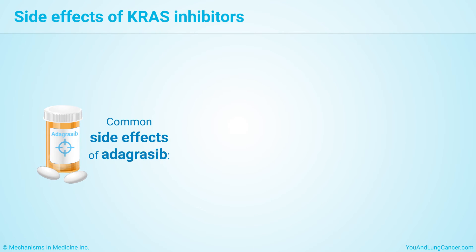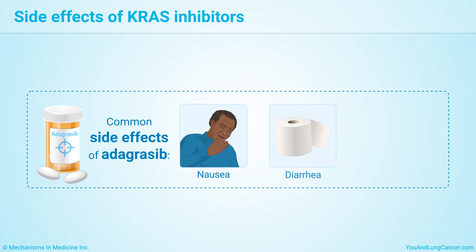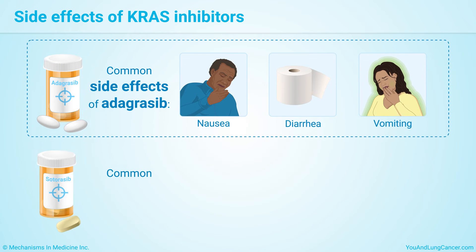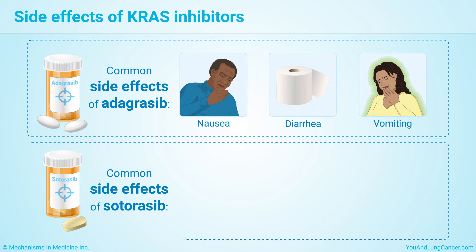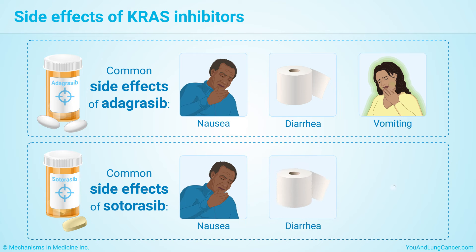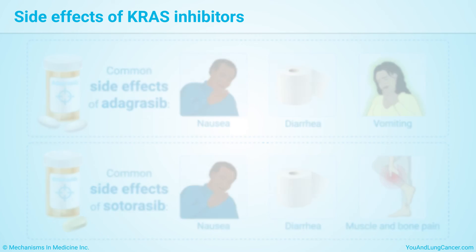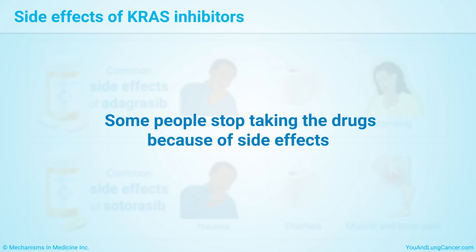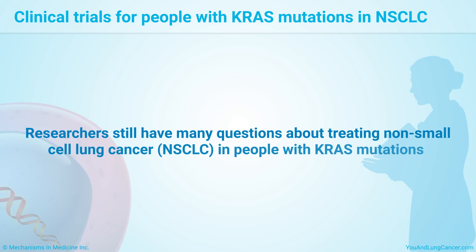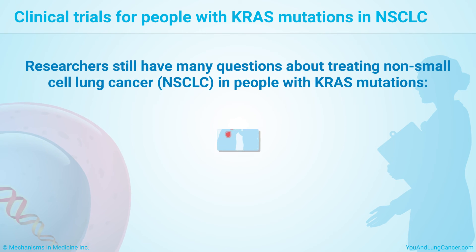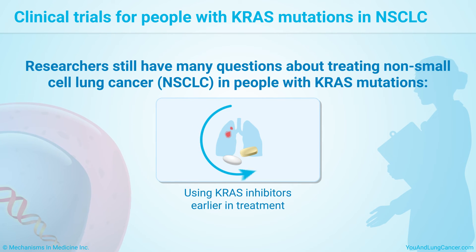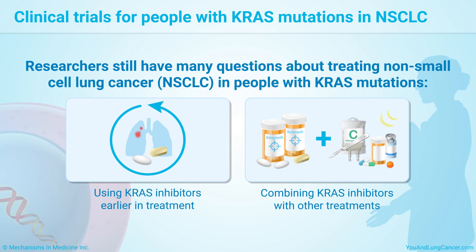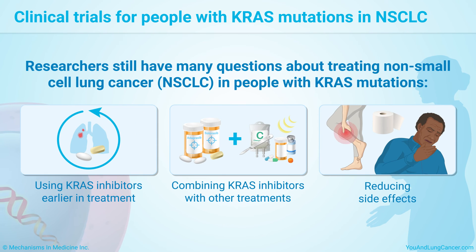Common side effects of adagrasib include nausea, diarrhea, and vomiting. More common side effects of taking sodoracib can include nausea, diarrhea, and muscle and bone pain. Some people stop taking these drugs because of side effects, but not all do. Researchers still have many questions about treating non-small cell lung cancer in people with KRAS mutations. These include using KRAS inhibitors earlier in lung cancer treatment, combining these drugs with other treatments, and reducing side effects.